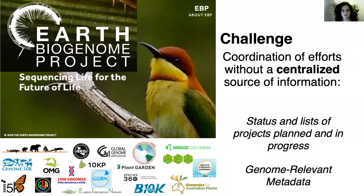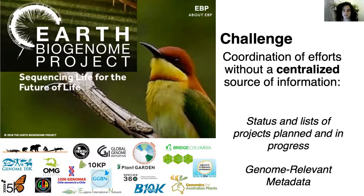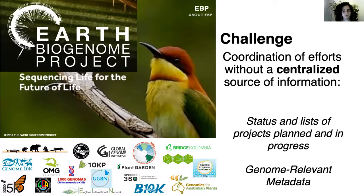One of the main challenges faced by this network is coordination of efforts, especially without a centralized source of information on two broad categories of data. First, although we have a lot of information on sequencing projects that have been completed, information on status and lists of sequencing projects still in the planning or in-progress stages is not easily findable. And second, genome-relevant metadata such as chromosome number, ploidy, and genome size estimates for target species are usually scattered in the literature but would benefit from being collated into a single location to help guide the planning and validation of these projects.